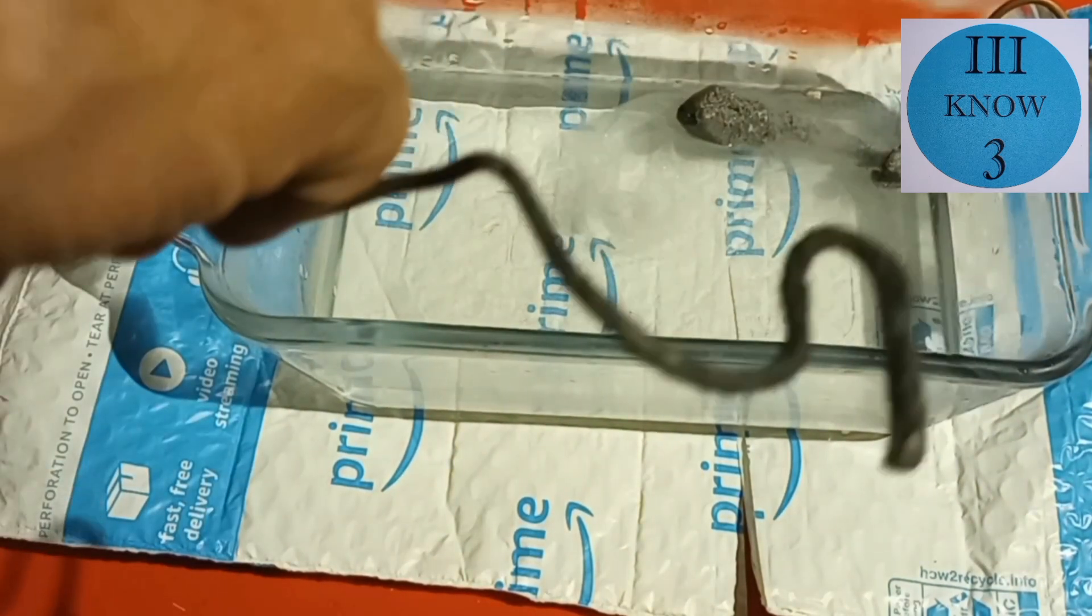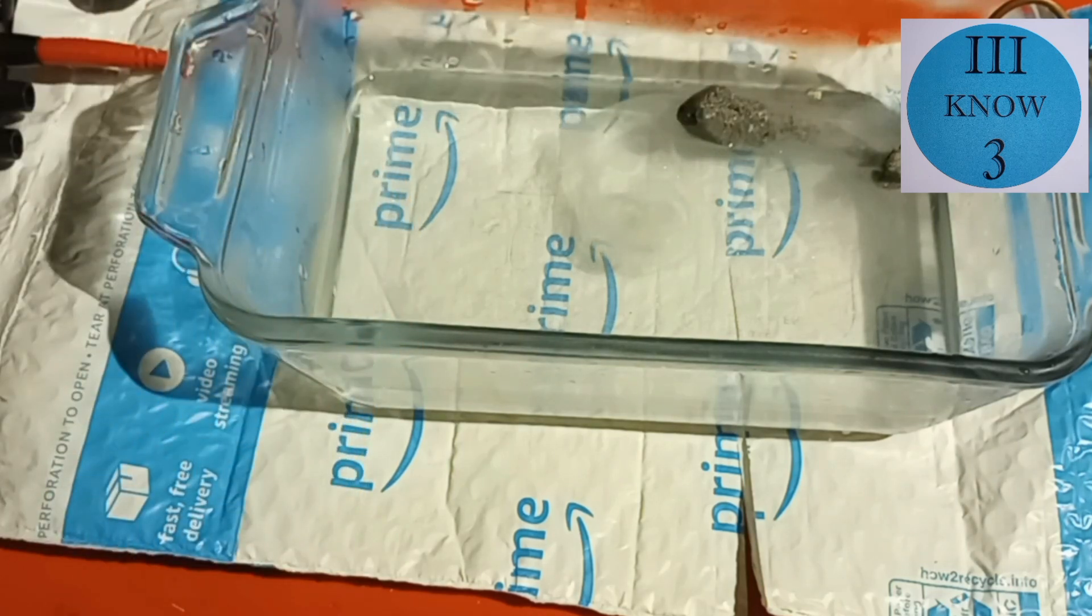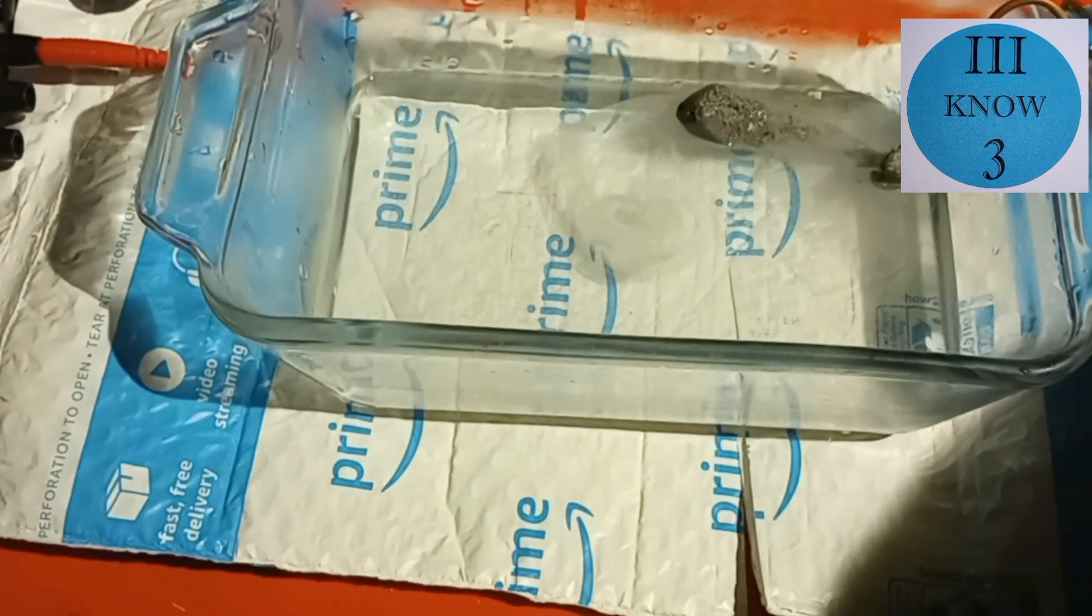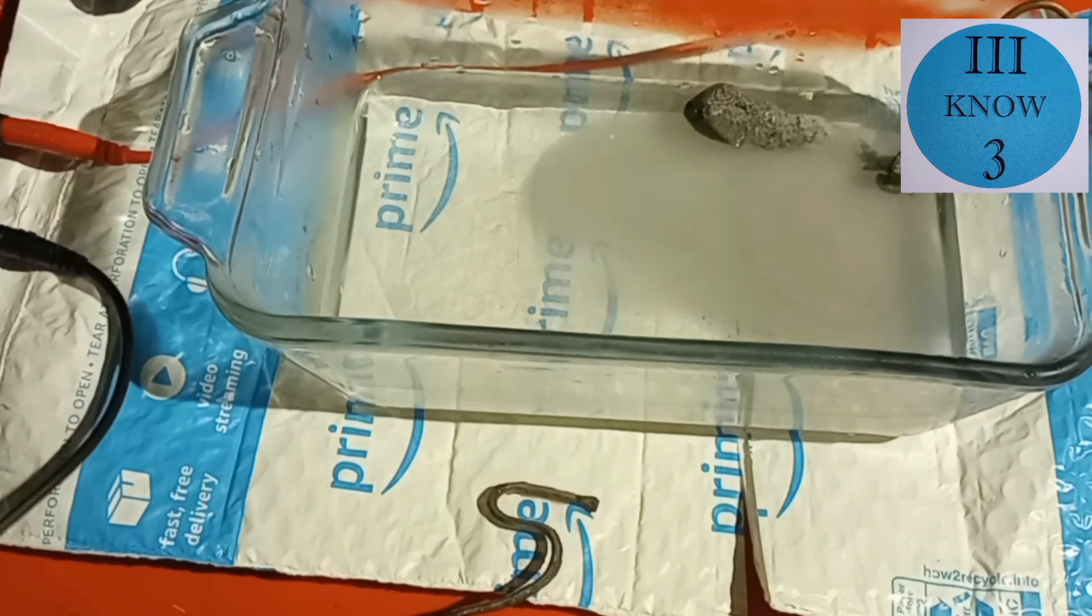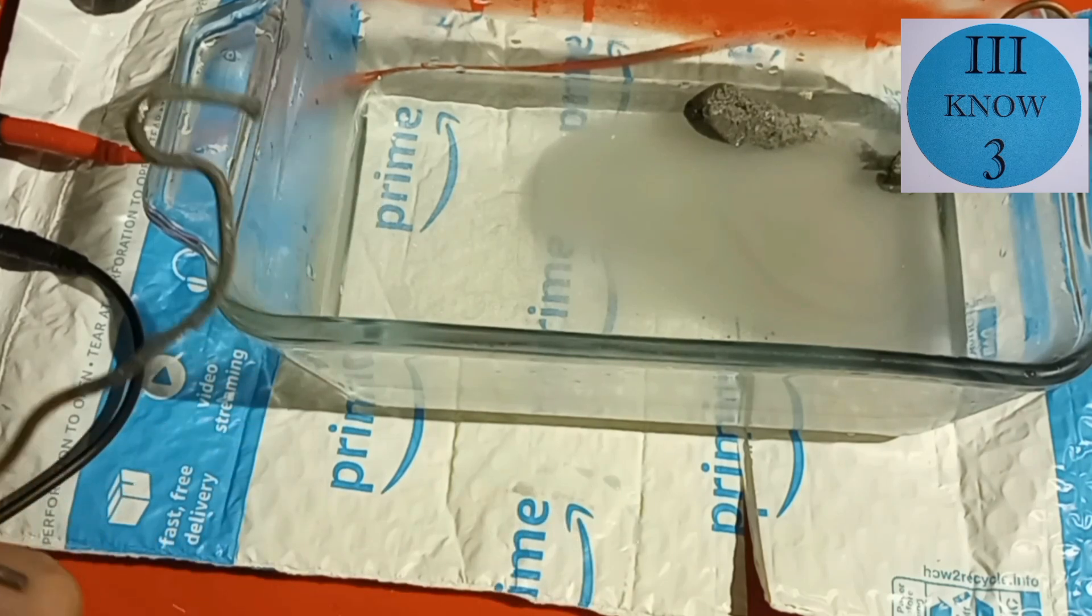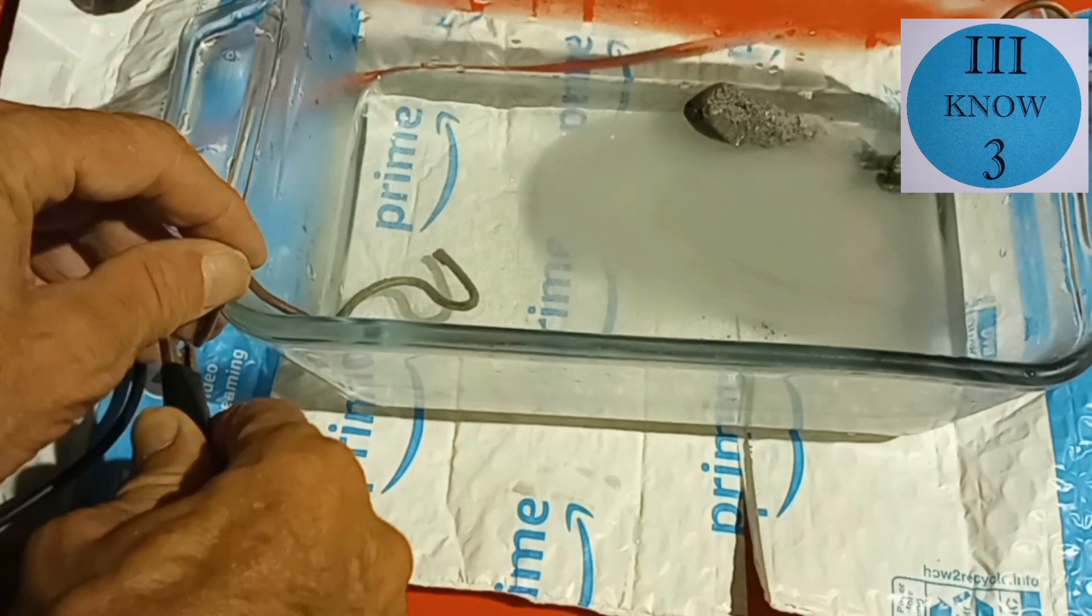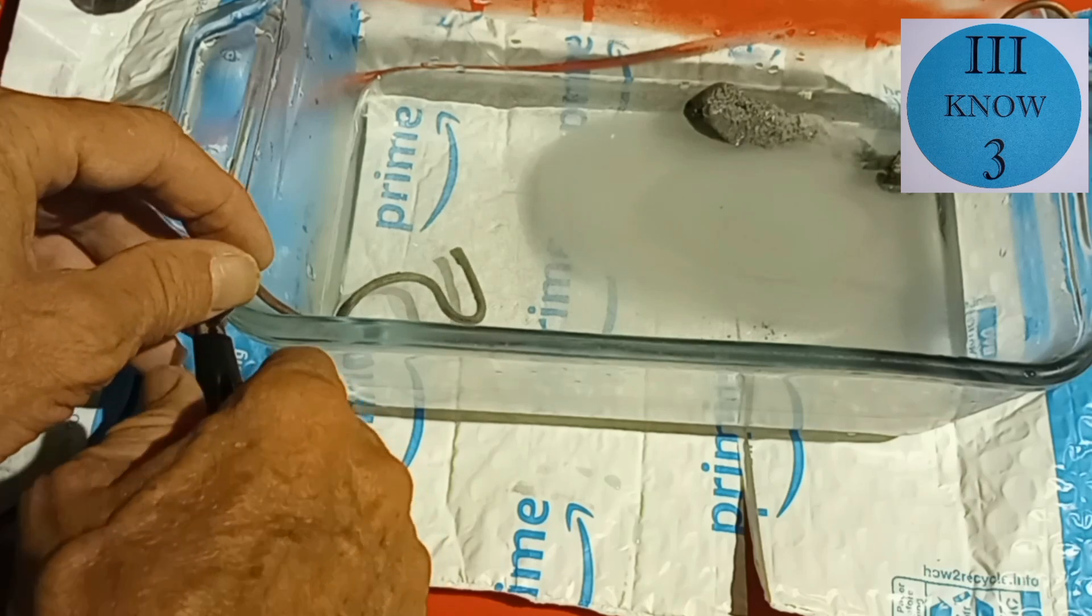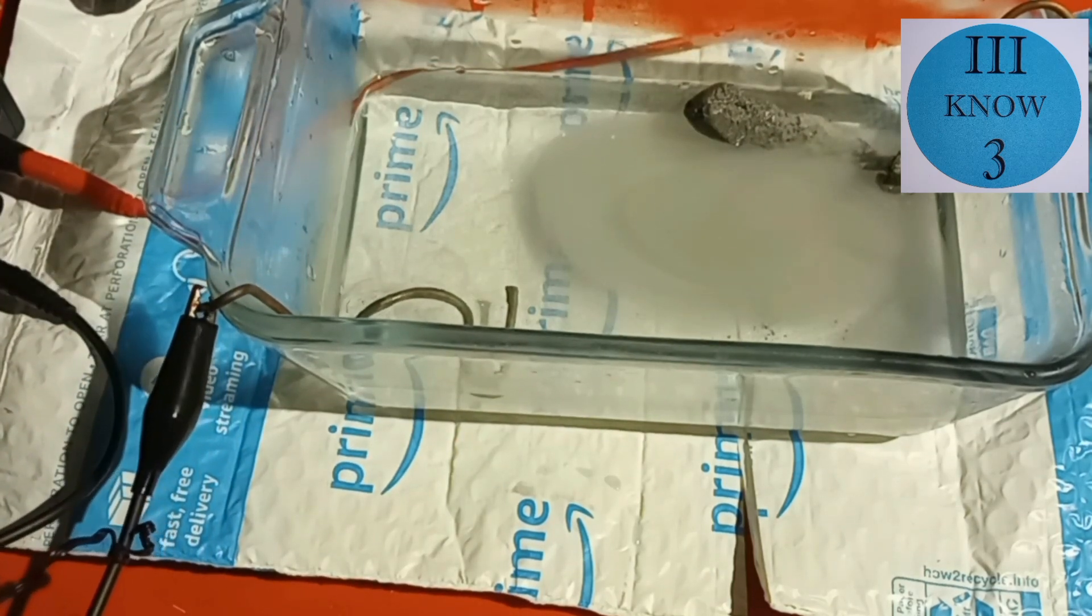For the cathode, we're going to use the other cathode from the last video, that is copper wire that has tin plating on it. And this is going to get hooked up to the black wire, the negative of the power supply. And then we'll turn on the power supply.